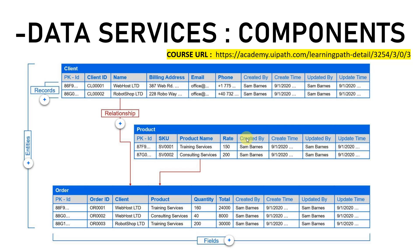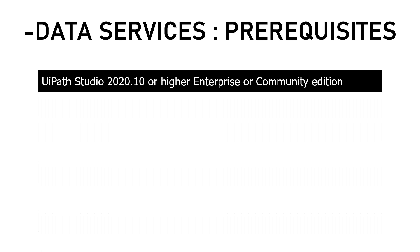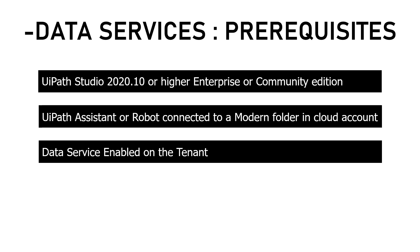Now let's look at the prerequisites needed in UiPath Studio to get started with data services. First, you should have Studio version 2020 or above — either the higher enterprise edition or the community edition. Second, your UiPath Assistant or robot should be connected to a modern folder in the cloud account. We have two types of folders — modern and classic — and the assistant should be connected to a modern folder.